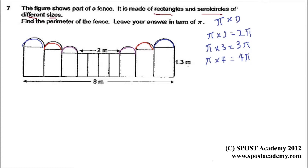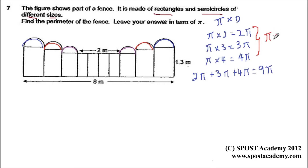So the total circumference of the three different circles will be equivalent to 2pi plus 3pi plus 4pi, which gives us a total of 9pi. This is actually equivalent to pi times the sum of 2 plus 3 plus 4, which equals pi times 9.